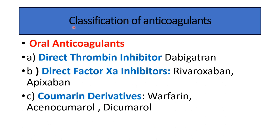The next group is oral anticoagulants, which again include direct thrombin inhibitors such as dabigatran, and direct factor 10 inhibitors such as rivaroxaban and apixaban. The second subgroup is coumarin derivatives, which include warfarin, acenocoumarol, and dicoumarol.